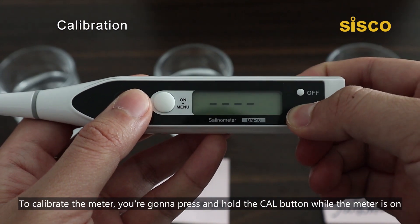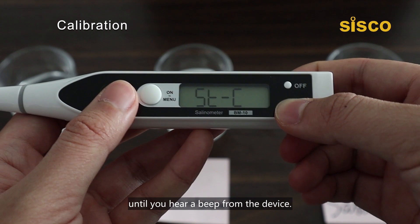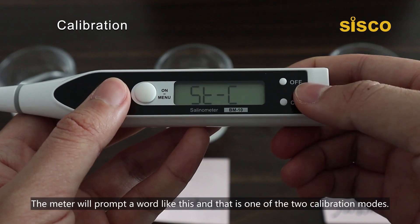To calibrate the meter, you're going to press and hold the CAL button while the meter is on until you hear a beep from the device. The meter will prompt a word like this,